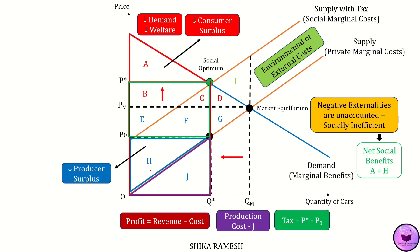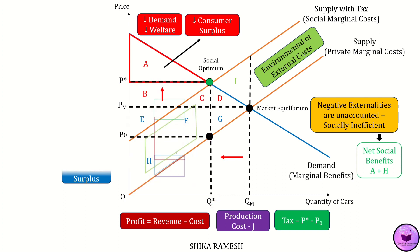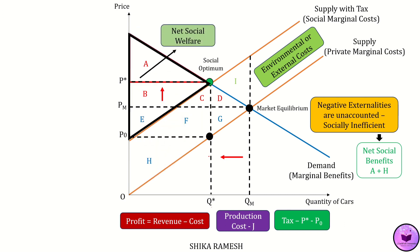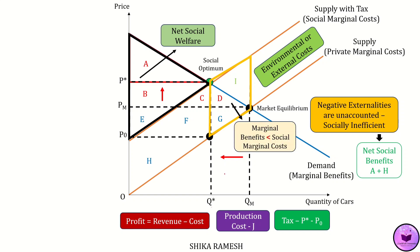The externality cost from Q star quantity of automobiles is C plus F plus H. To determine the net social benefits with Pigovian tax, we add the consumer and producer surplus with the tax and then subtract the externality, and we get the area A plus B plus E. The externality damage associated with production between Q star and QM — the area D plus G plus I — has been avoided, because if an additional automobile is produced beyond Q star, then the marginal social cost will be greater than marginal benefits.